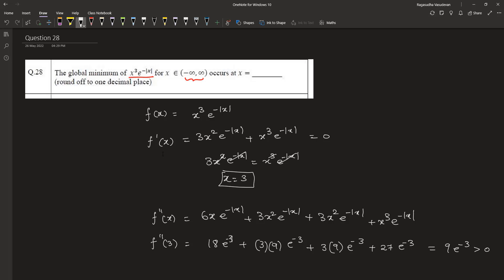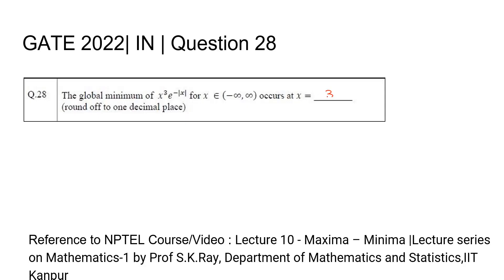Therefore, there occurs a global minimum at x equals 3 and the value of global minimum is 9 e power minus 3. Since the rate of change of slope is positive, the curve is sloping up at that point, which means that a minimum had occurred before 3. Therefore, at x equals 3, we do have a global minimum. So the global minimum occurs at x equals 3. The answer is 3. Thank you.